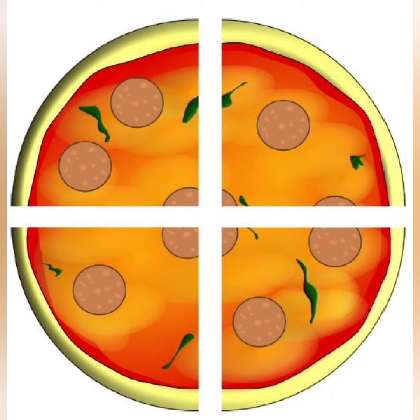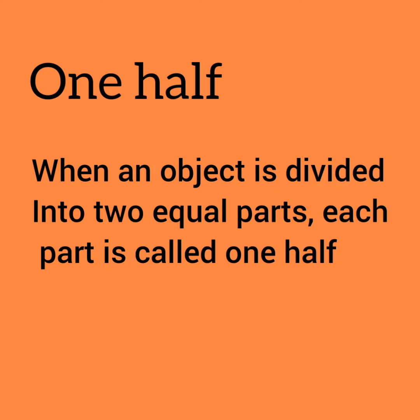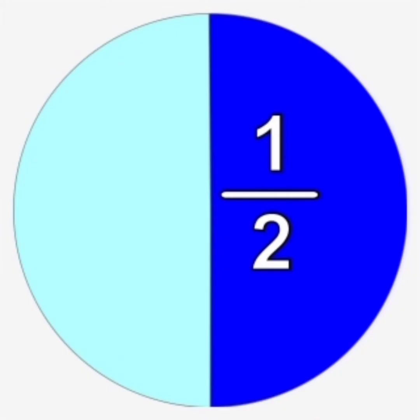Now, let us see some important things in the fraction. One half. What is one half? It is the half of an object. That is, when an object is divided into two equal parts, each part is called half. Both pieces are of same size and together makes a whole, written as one by two or one half.